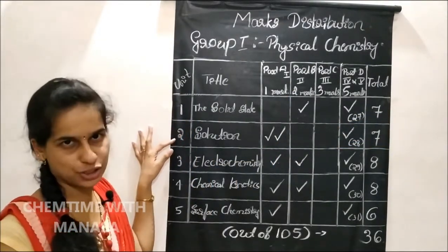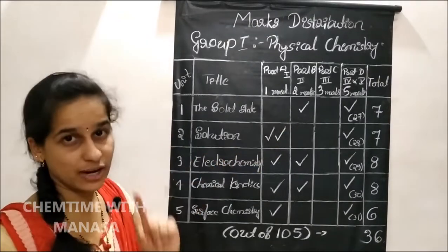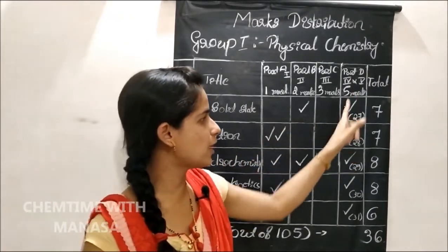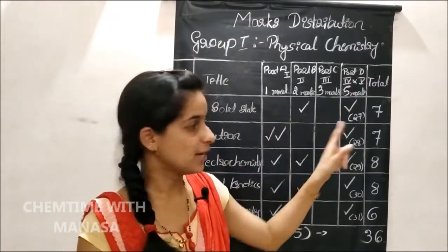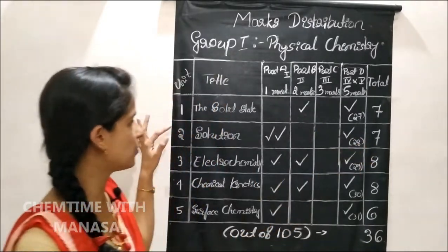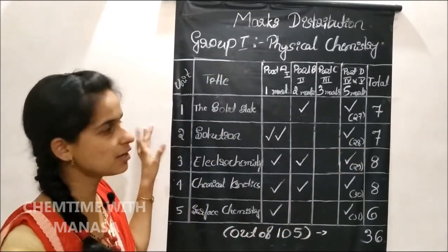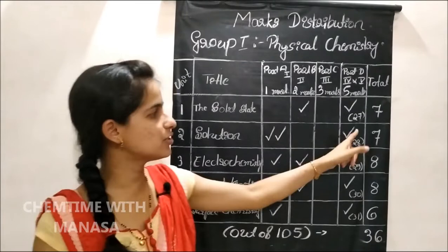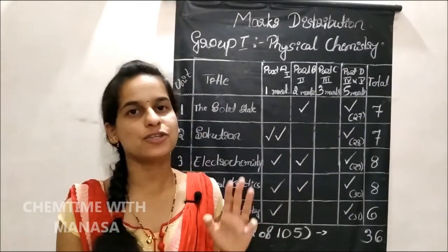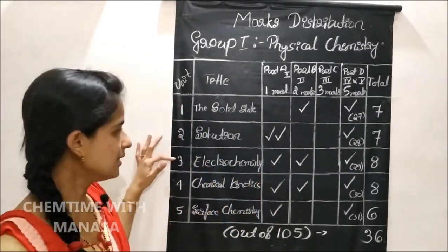Then, solutions. From the solutions chapter, there will be 2 one-mark questions and 1 five-mark question. The 28th question in your question paper is from the solutions chapter. Here also, you can expect a 3 marks numerical.